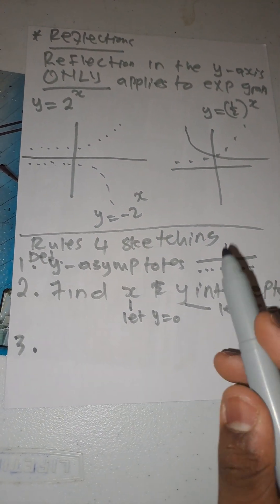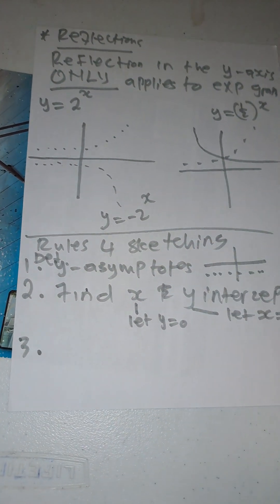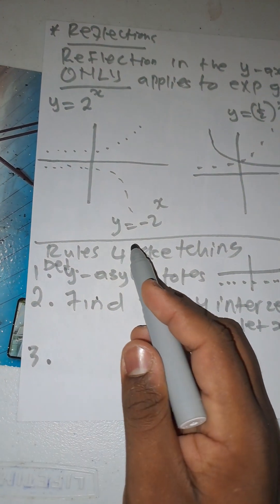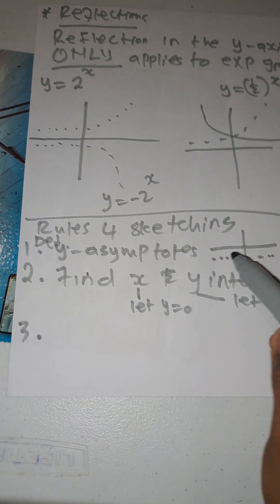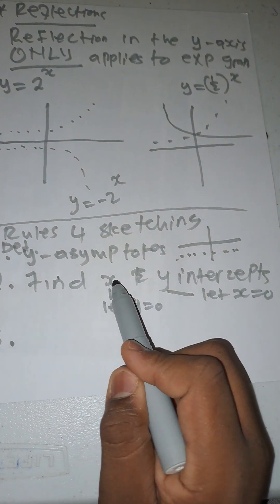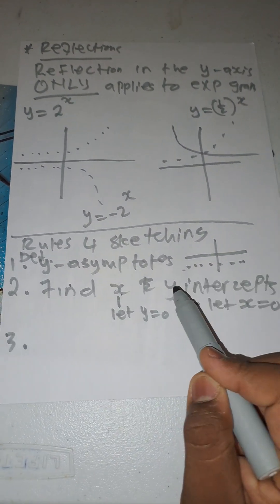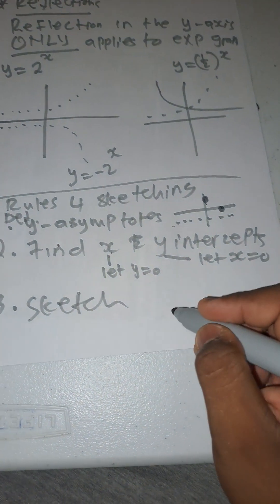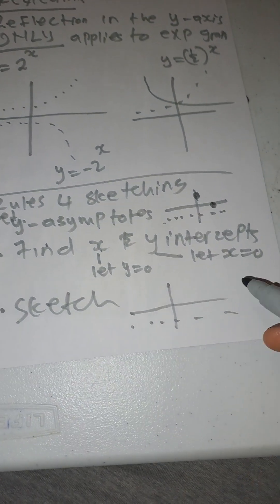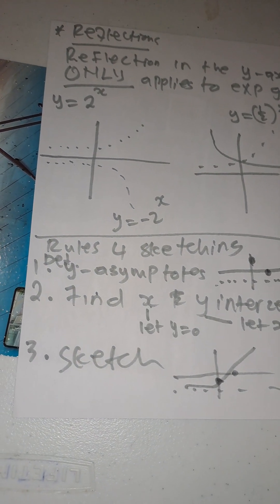Number three: draw the graph. For an exponential graph, once you have the y-intercept, the x-intercept, and the asymptote, you're done. The reflection in the y-axis only applies to exponential graphs. So the rules for sketching are: determine the y-asymptote (dotted horizontal line), find x and y intercepts, then sketch.